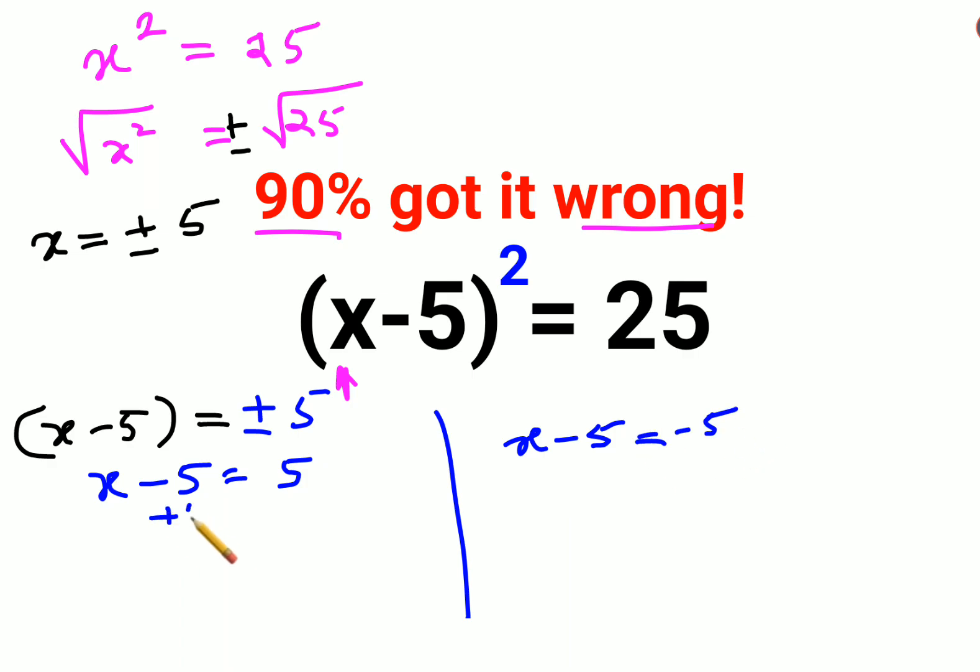So now adding 5 on both sides, the numbers are shifted completely on the other side of the equal sign. So here I can say the value of x is 10, because 5 plus 5 is 10.